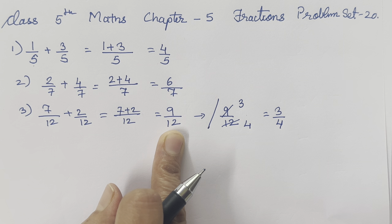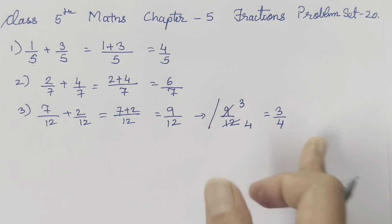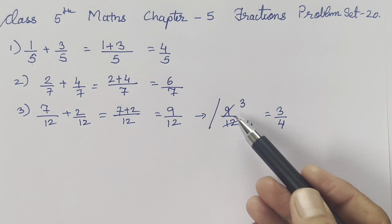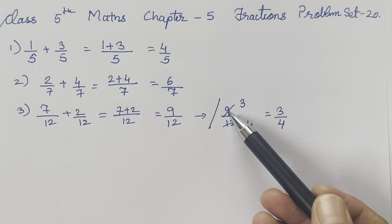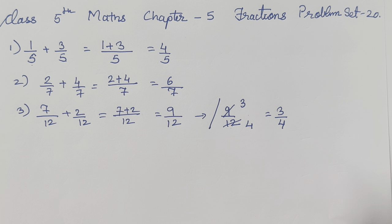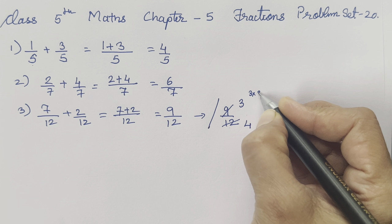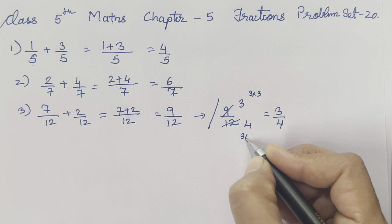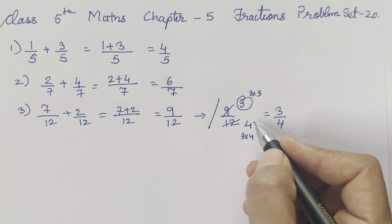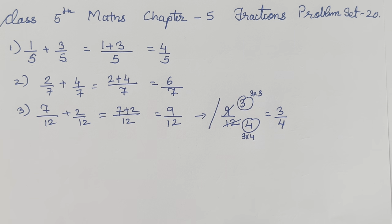You can either write 9 upon 12 or the reduced answer 3 upon 4 — both are correct. The table I used here is the table of 3: 3 threes are 9, and 3 fours are 12. So we get 3 upon 4. In case you are not able to understand, we have 3 and 4 here.